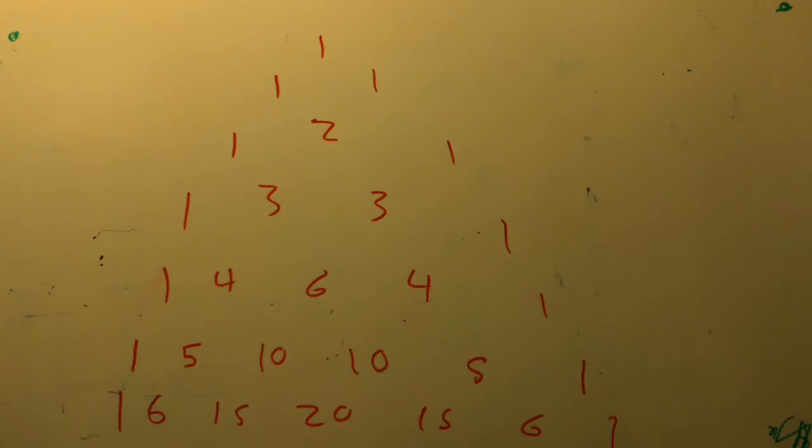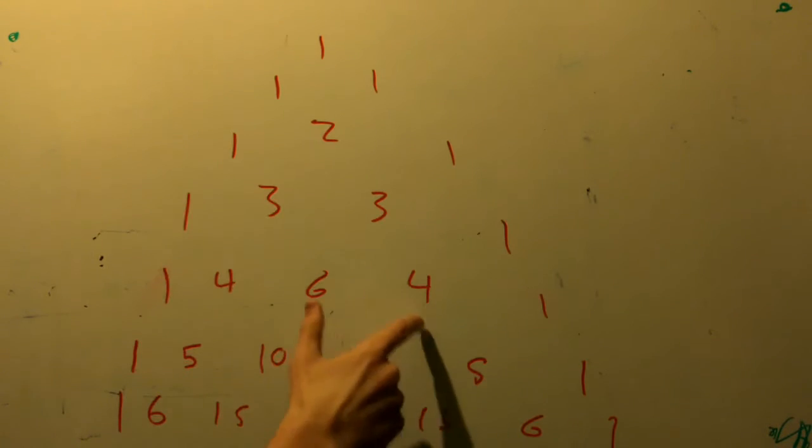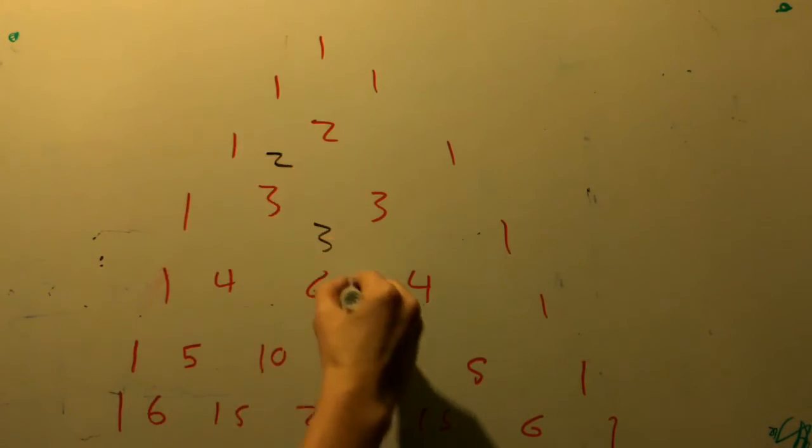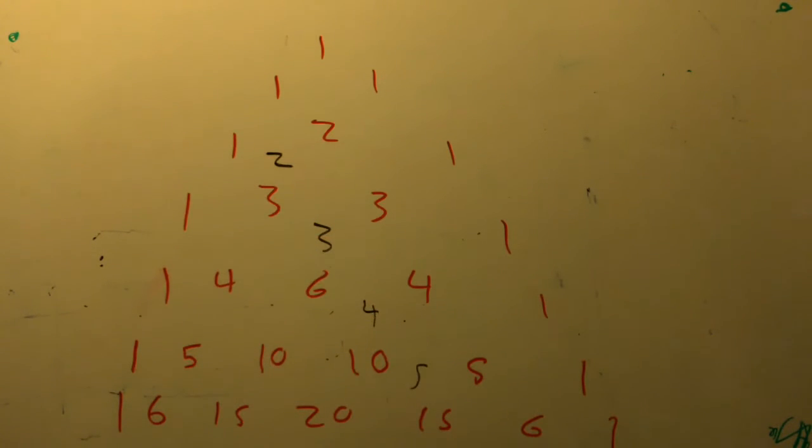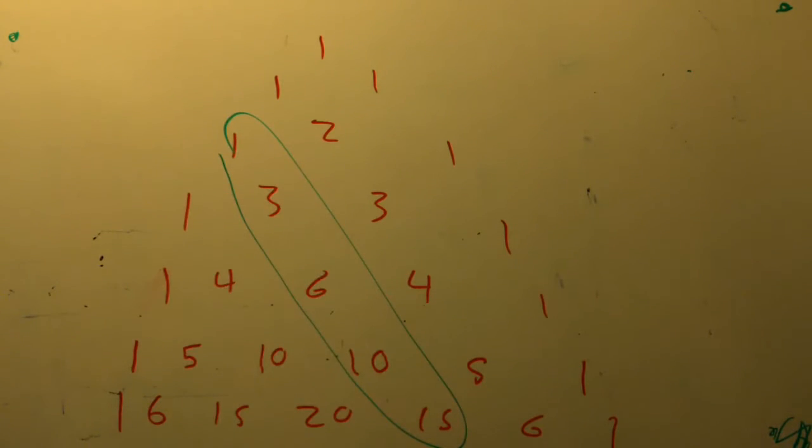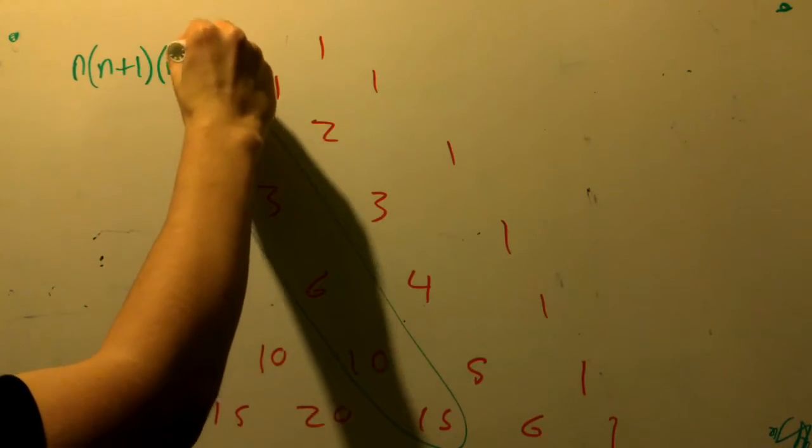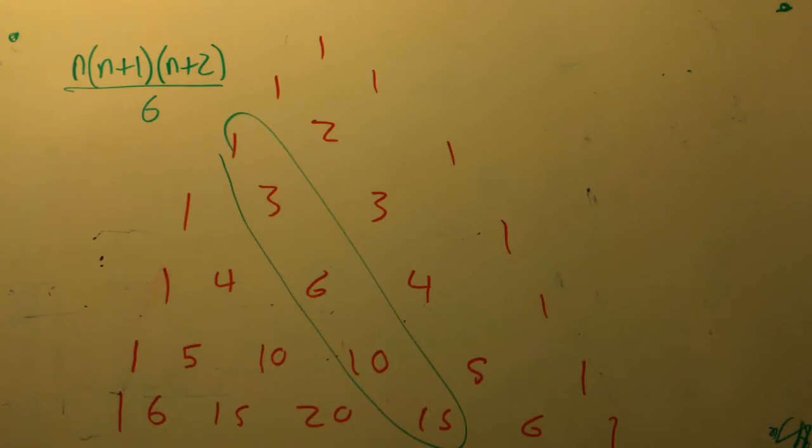It's also important to note that there are different types of series in here. This one is constant. This is linear because the differences are the same, and this one's quadratic, where it's 2, 3, 4, 5, and the difference of differences is 1, 1, and 1, so we know it's quadratic. The one that we're concerned about for this proof is this one, and the way you find the sum is n times n plus 1 times n plus 2 over 6. I'll put a link to a proof in the description below, but we'll save that for a different video.